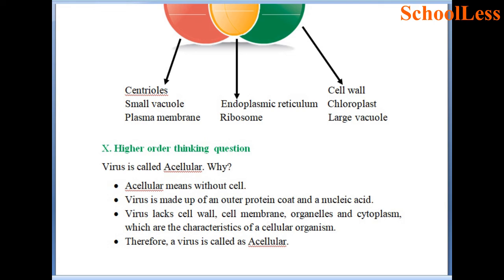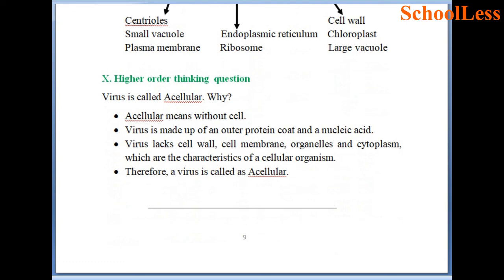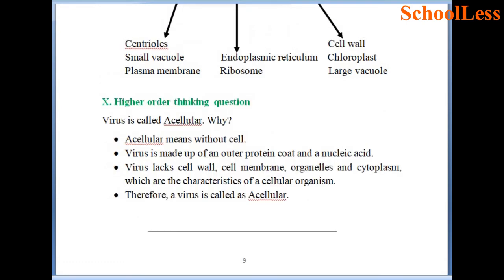Higher-order thinking question: Virus is called acellular — why? Acellular means without a cell. Virus is made up of an outer protein coat and nucleic acid. Virus lacks cell wall, cell membrane, organelles and cytoplasm, which are characteristics of a cellular organism. For these reasons we call a virus acellular. That brings us to the end of the session — I hope you understood all the answers correctly. If you like the video, please share with your friends and subscribe to the Schoolless YouTube channel. Thank you.